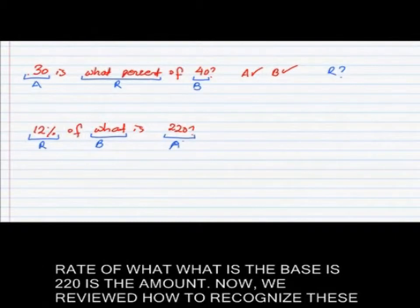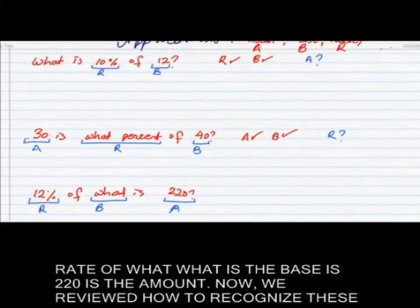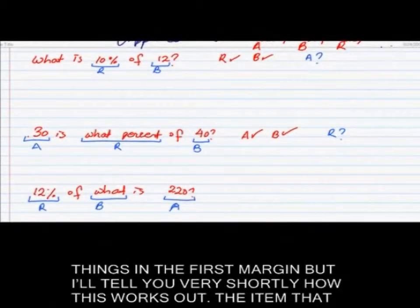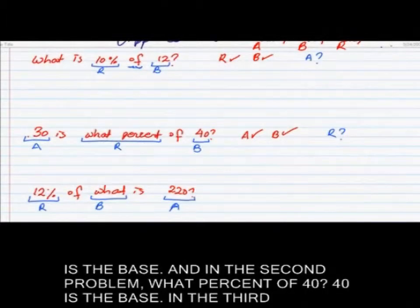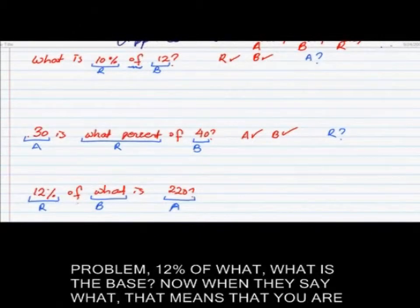We reviewed how to recognize these things in the first module, but briefly: the item that comes after the word 'of' is the base. So in 'what is something of 12?', 12 is the base. In 'what percent of 40?', 40 is the base. In '12% of what?', what is the base.